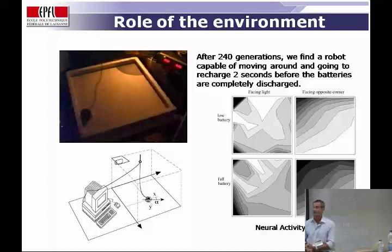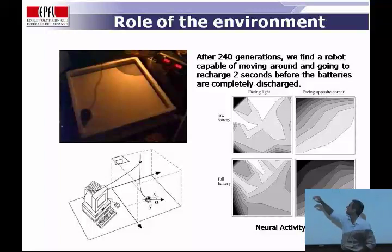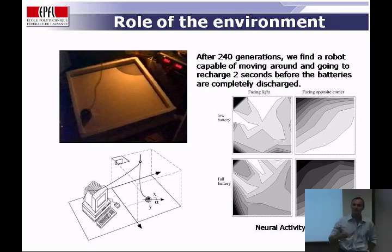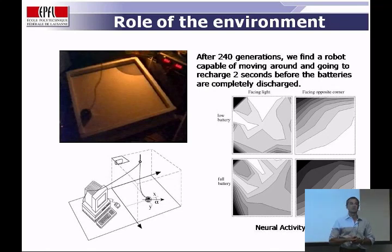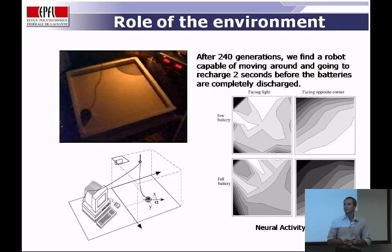One of the beautiful things about evolution is that the role of the human designer can be reduced to a very minimum, and the environment and the robot morphology and sensors can play a very important role. Now let's take the same robot and put it in a different environment. We have an environment where the robot can recharge its own battery by going to a black spot in the top corner. The robot has virtual batteries with a duration of approximately 20 seconds — if it doesn't reach the charging spot in time, it dies and can no longer accumulate fitness.